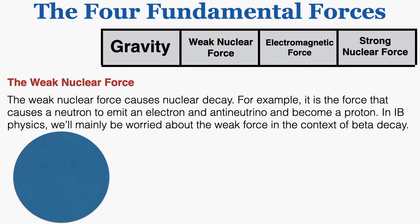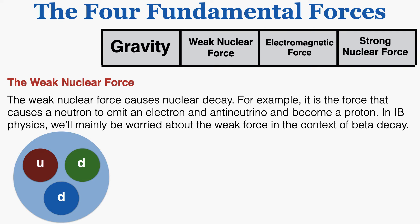The weak nuclear force causes nuclear decay. For example, it's the force that causes a neutron to emit an electron and an anti-neutrino and become a proton. In IB physics, we'll mainly focus on the weak force in the context of beta decay. Inside a neutron you find three smaller particles called quarks. In beta decay, one of the down quarks releases an electron, and the force that causes that electron to be expelled from the quark is the weak nuclear force.